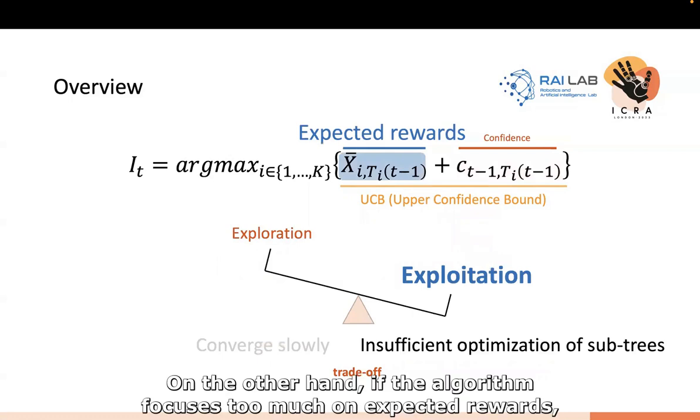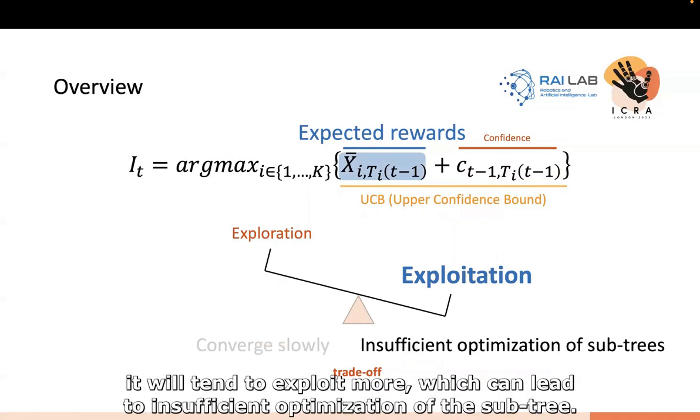On the other hand, if the algorithm focuses too much on expected reward, it will tend to exploit more, which can lead to insufficient optimization of the sub-tree.